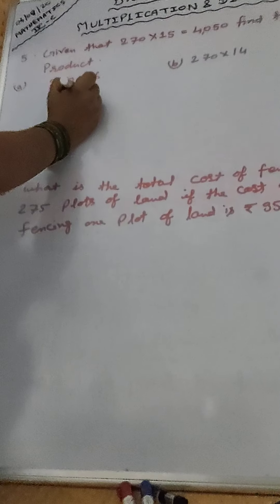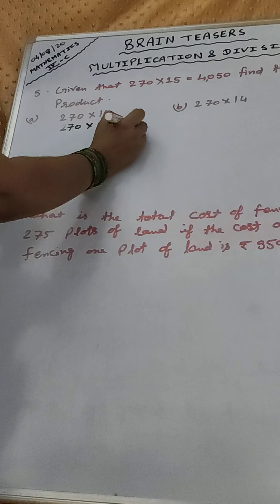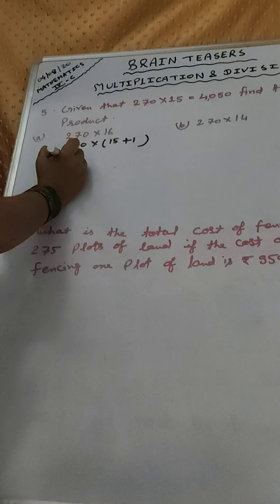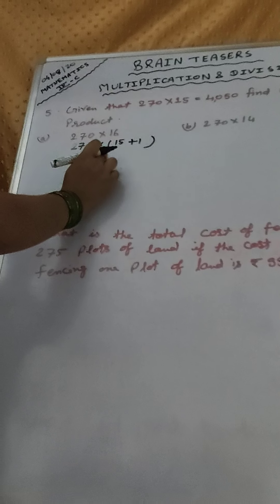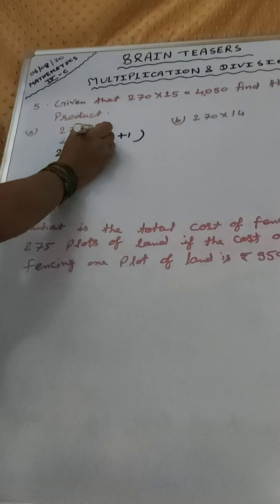We can also write like this: 270 into 15 plus 1, that will be 16. Now, we will multiply like this.